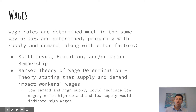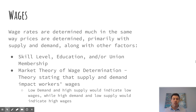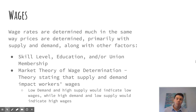Finally, looking at wages — wage rates are determined through market forces, primarily supply and demand, but other factors like skill levels, education, and union membership also come into play. The market theory of wage determination states that low demand and high supply indicates a low wage, while high demand and low supply indicates a high wage. We'll go into more detail on these topics in class, but this gives you the overview of the information you need moving forward through this unit.